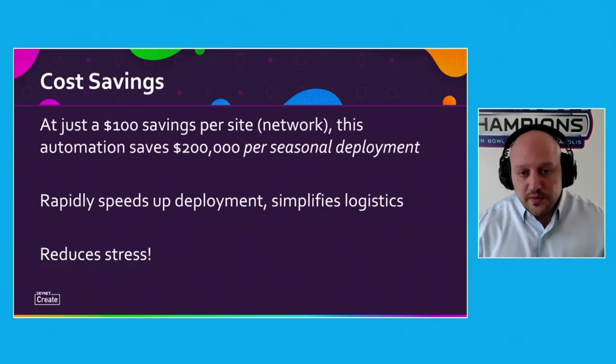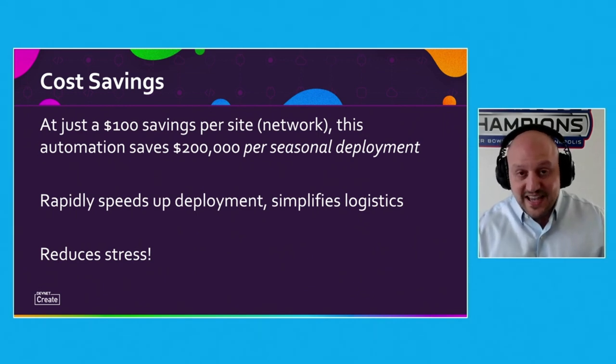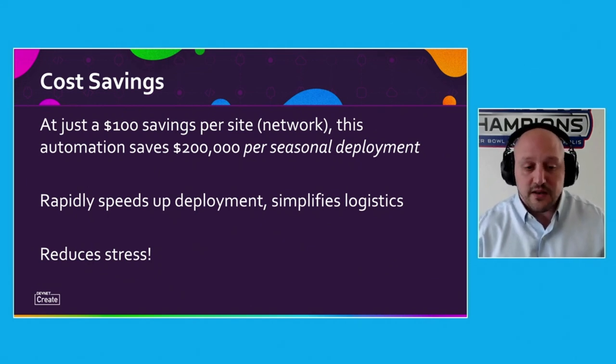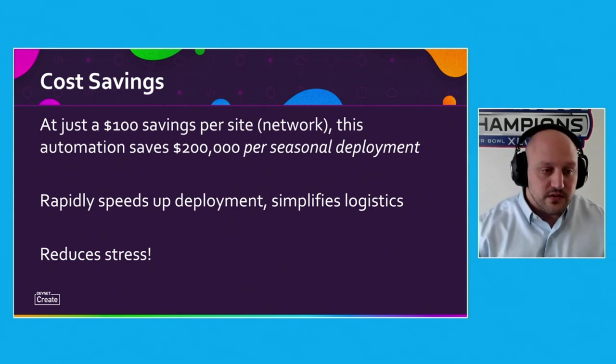From a cost-saving standpoint, we were working with the customer to figure out how much time and money was saved. They told us that just $100 savings per site — per network — this automation would save $200,000 per seasonal deployment. The end goal is to run this again and again. As long as the API doesn't change too much, this is going to be a huge time and money saver, and it's made for a very satisfied Meraki customer. It rapidly speeds up deployment, greatly simplifies logistics, and reduces stress. They're able to fire this off in advance of the season and know that it's consistent and correct from the very first network to the very last. Thank you for joining — any questions, comments, complaints, or creative insults, you can hit me on Twitter at Radakasa. Really appreciate your time and attention today, and hope you have a great DevNet event.